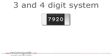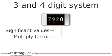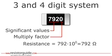Now we consider a four digit code. Here the first three digits represent the significant values of the resistance. This code is used for more accurate resistors. The fourth digit is the multiply factor. For this example the resistance is 792 times 10 to the power of 0, which results in 792 ohms.